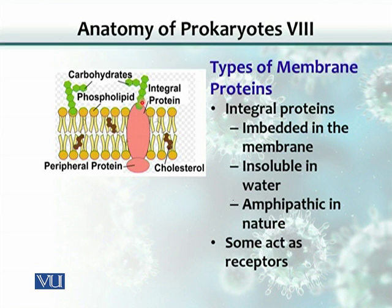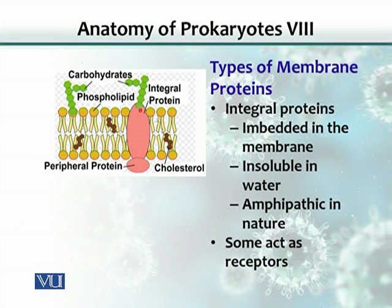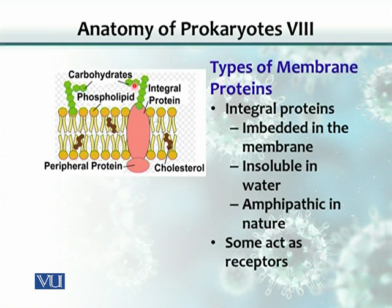Some integral proteins act as receptors and may be modified by carbohydrates — these are called glycoproteins. They can bind different ligands or chemicals. A ligand outside the cell membrane binds to the receptor, which then conveys its message to the inside — this is what we call signal transduction. Through receptors, the cell can sense nutrients in its environment, and the signal goes inside the cell, triggering release of enzymes needed to utilize that nutrient.